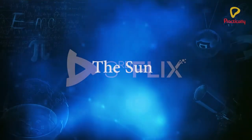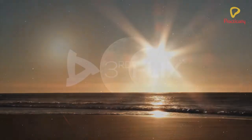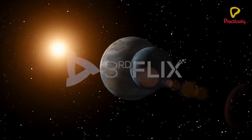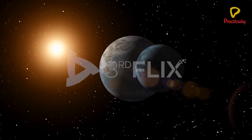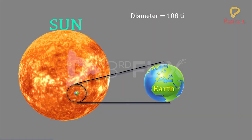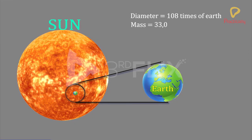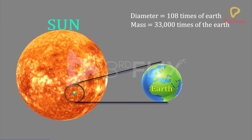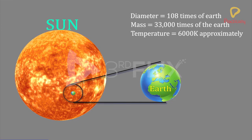The Sun. The sun is the brightest star in our solar system, which gives light and heat. The diameter of the sun is 108 times that of the Earth and its mass is 33,000 times that of the Earth. The temperature of the surface is approximately 6,000 Kelvin.